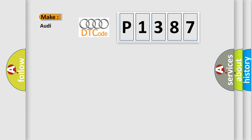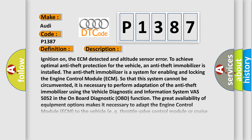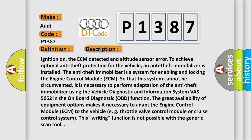So, what does the diagnostic trouble code P1387 interpret specifically for Audi car manufacturers? The basic definition is: internal control module altitude sensor error. Here is a short description of this DTC code.